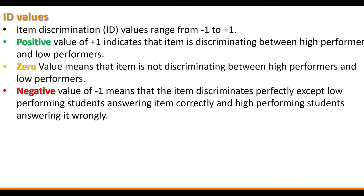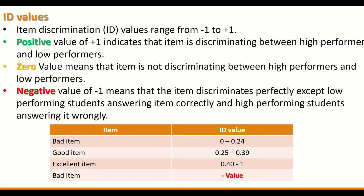A negative value of minus 1 means that the item discriminates perfectly in reverse — low performing students are answering the item correctly and high performing students are answering it wrongly. As shown in the table, items are classified as bad when the ID value is from 0 to 0.24, good when the value is between 0.25 and 0.39, and excellent when the value is between 0.4 and 1.